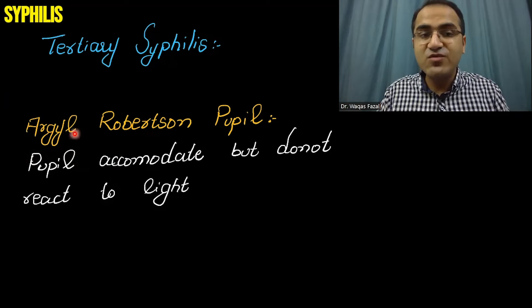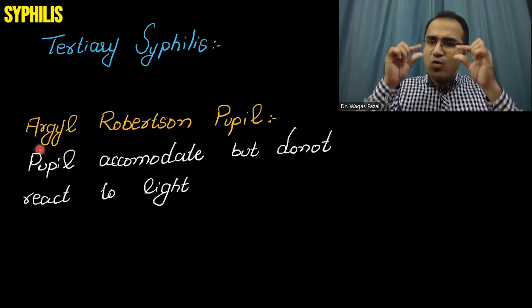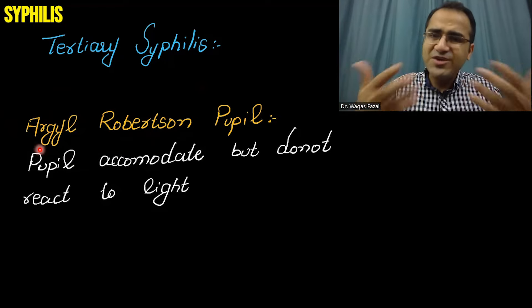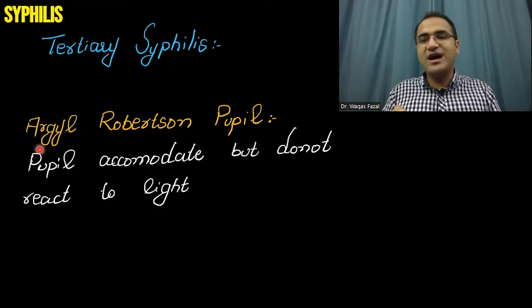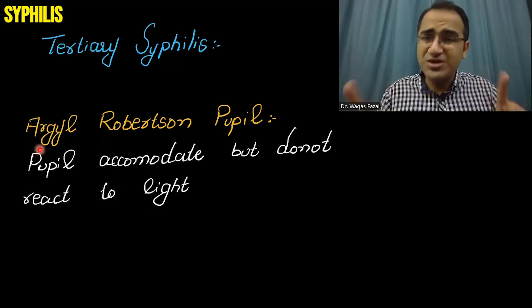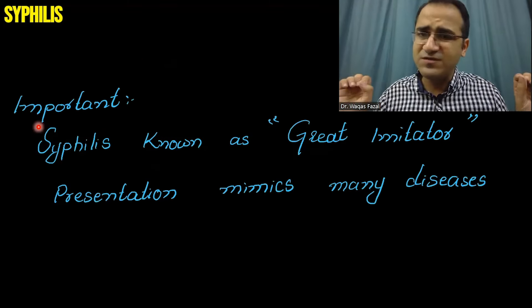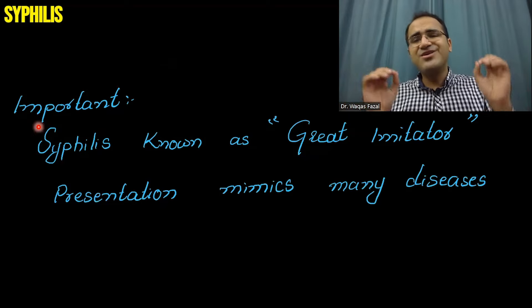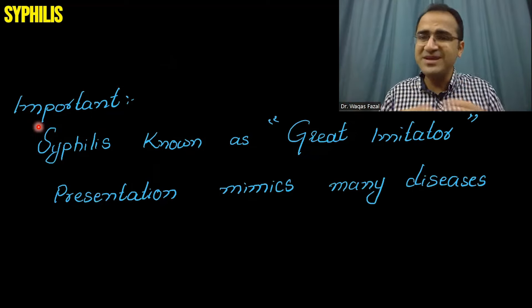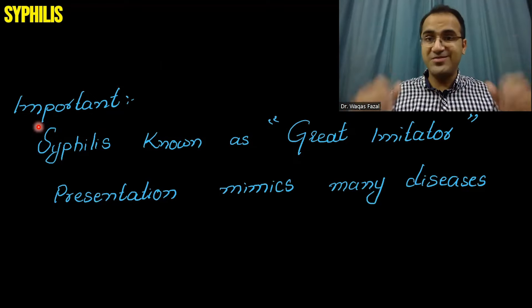Tertiary syphilis can also result in formation of the Argyll-Robertson pupil. In Argyll-Robertson pupil, the pupils accommodate to near or far objects but do not react to light — they do not constrict when light is shown to the eyes. Remember, syphilis has a wide spectrum of symptoms and is known as the 'great imitator' because it imitates and mimics many diseases.